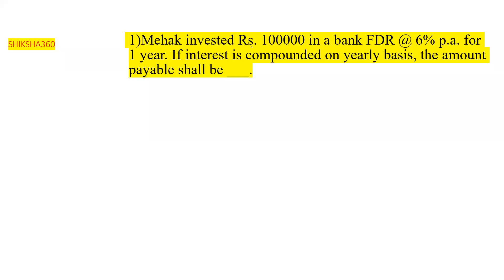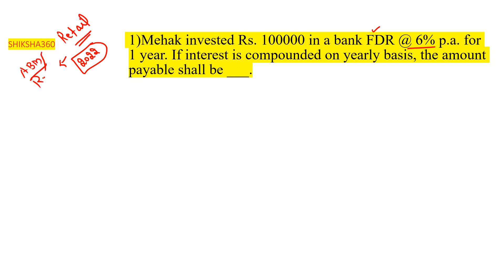The question states: Mahek invested rupees one lakh in a bank FDR at six percent per annum. This question was asked in the 2022 retail examination. This topic comes under both ABM and retail, so we also expect this type of question in JAB. We will discuss two to three questions of this type.